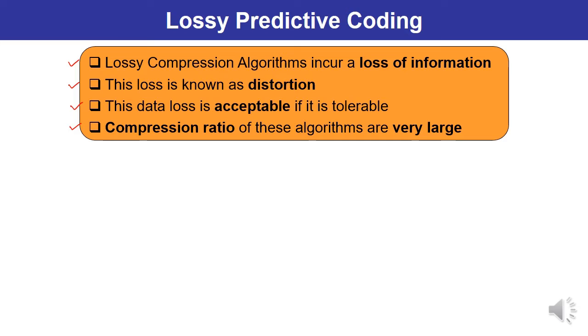You have found that compression ratio is quite small. But in case of lossy codings, lossy compression algorithms and lossy predictive coding, this compression ratio is usually large.